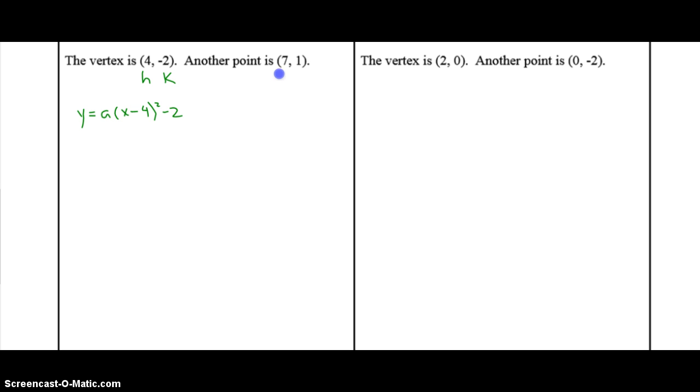So now we're going to take the 7 and substitute that in for the x. We're going to take the 1 and substitute it in for the y. And we have to solve this equation for a. Start with bed mass as much as you can. Brackets. 7 minus 4 is 3. Exponents. 3 squared is 9. Nothing else that you can do. So now equation solving. Add 2 to both sides. And then divide both sides by 9.